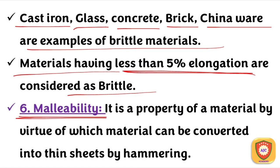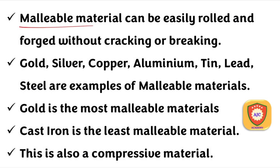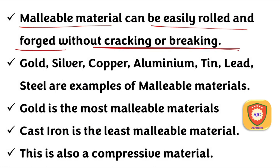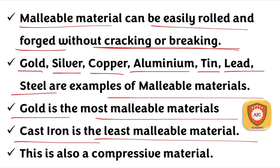Malleability is the property of a material by virtue of which it can be converted into thin sheets by hammering. Malleable materials include gold, silver, copper, aluminium, tin, lead, and steel. Gold is the most malleable material, while cast iron is the least malleable material.